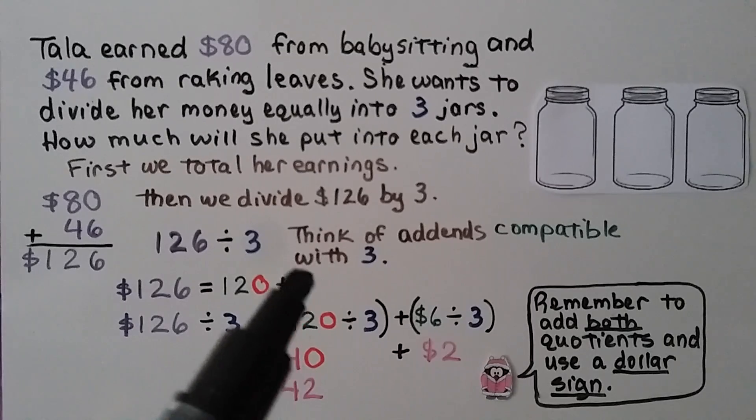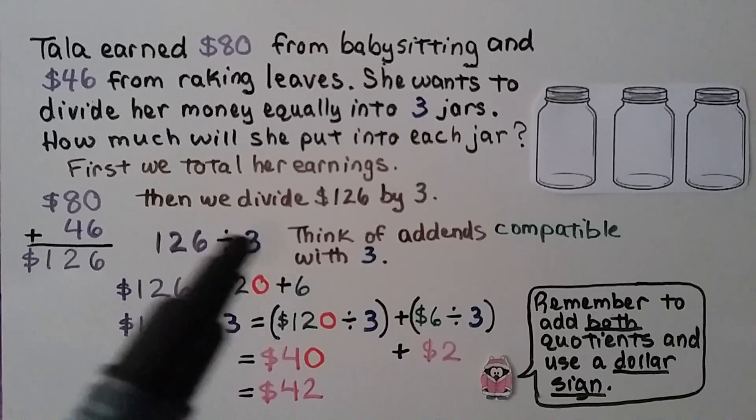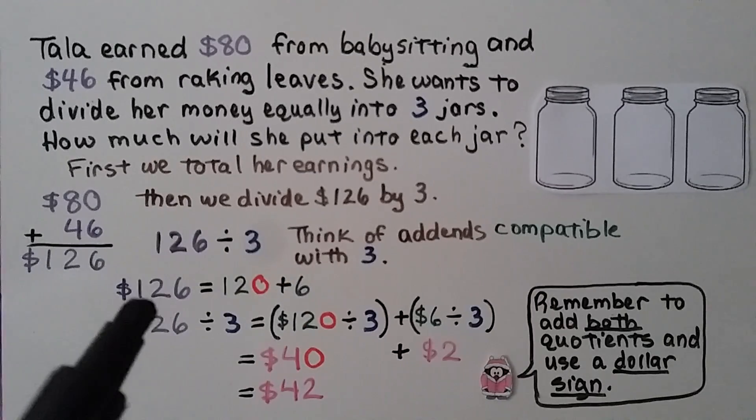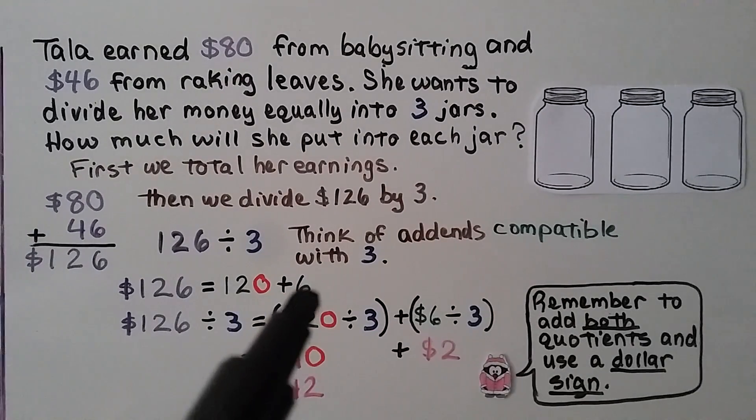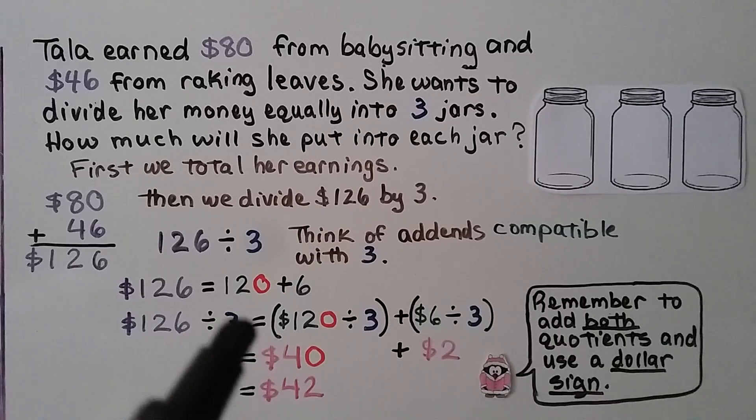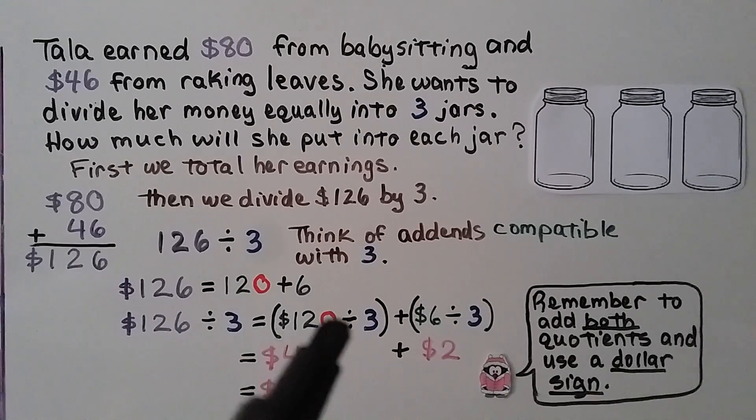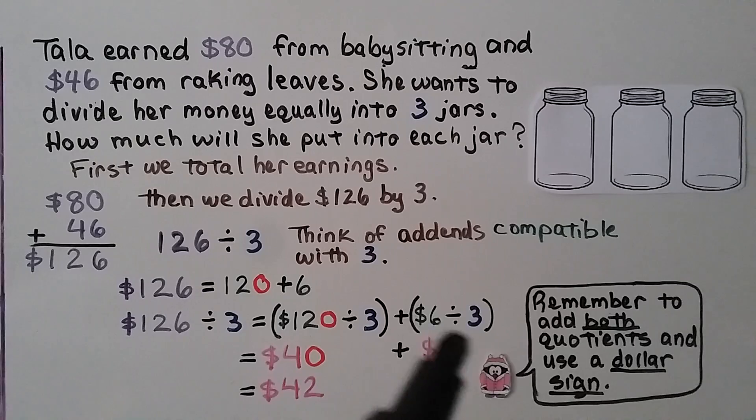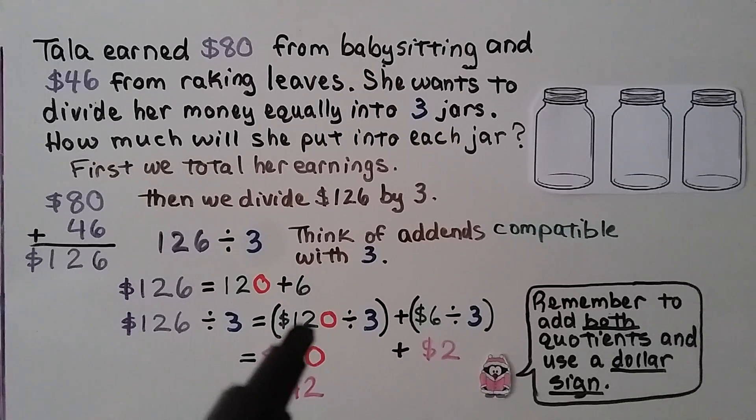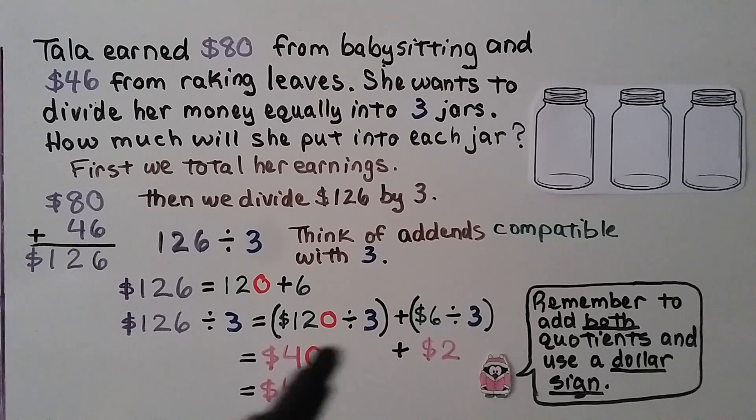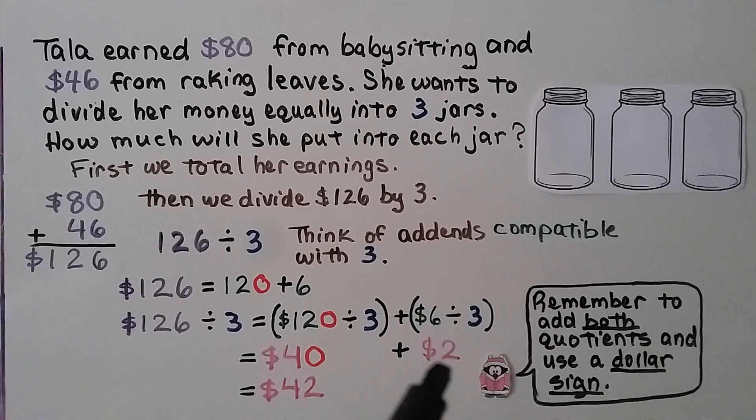Now we can divide $126 by 3 for the 3 jars. We think of addends that would be compatible with 3. We can break $126 into $120 plus 6. That means we have $120 divided by 3 plus $6 divided by 3. $120 divided by 3 would be $40. And $6 divided by 3 would be $2. She would put $42 in each jar.